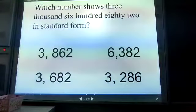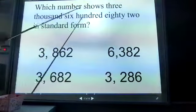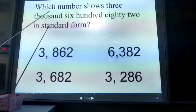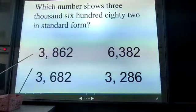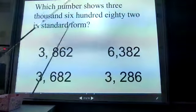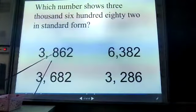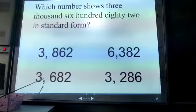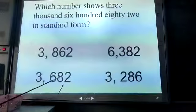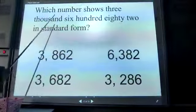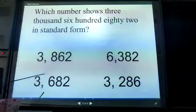The next one: which number shows 3,000? It may be this, this one, or this one. Now look for 600. You can identify that this is 800, this is 200, and this one is 600. So the correct answer is 3,682. This option is correct.